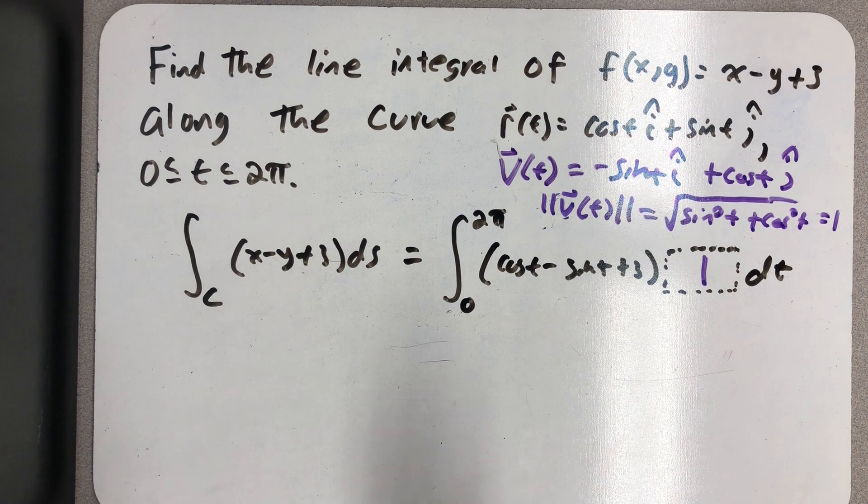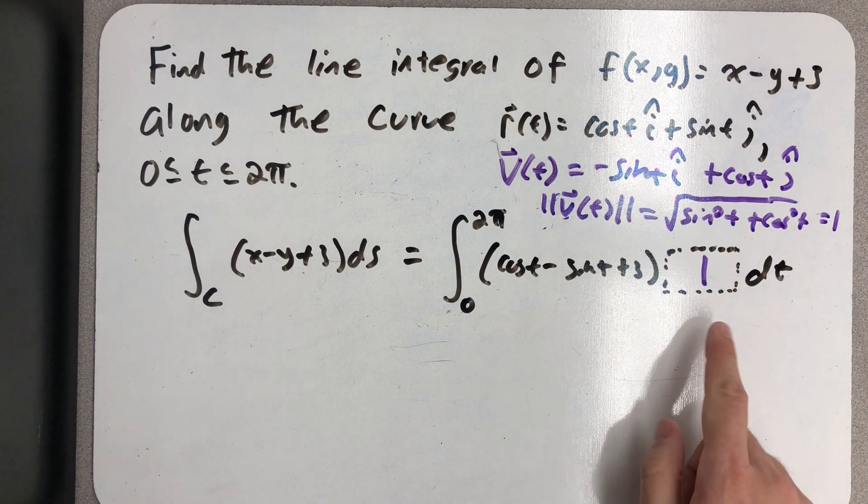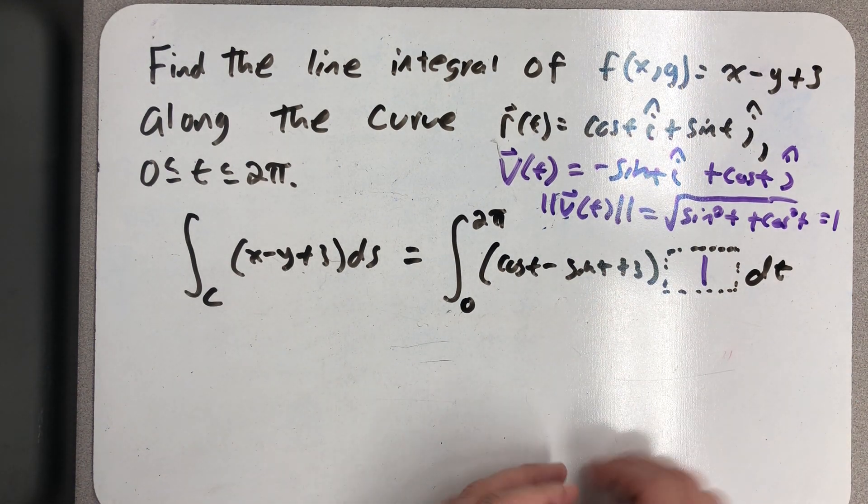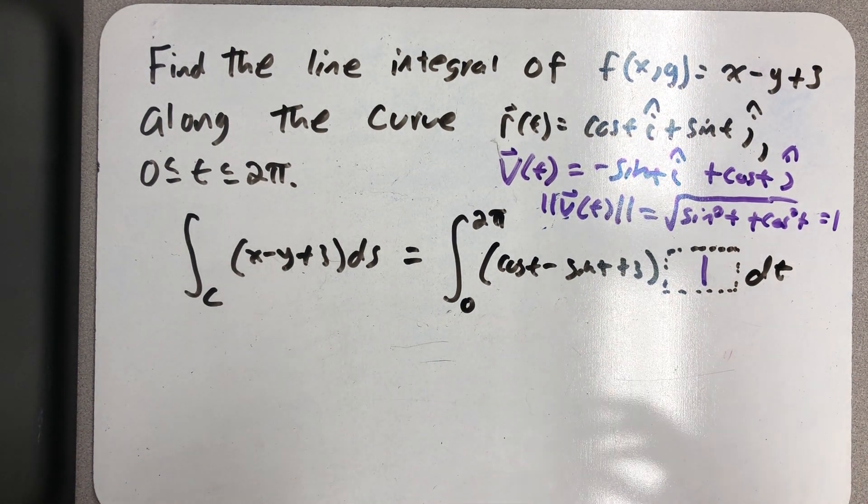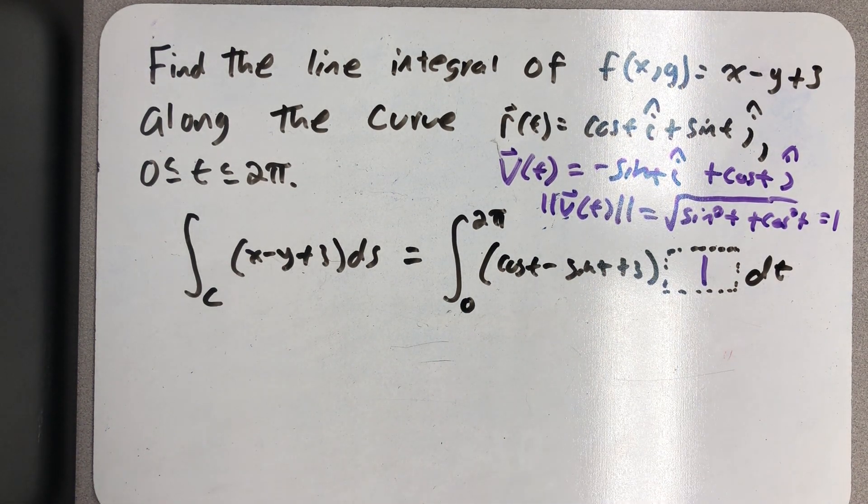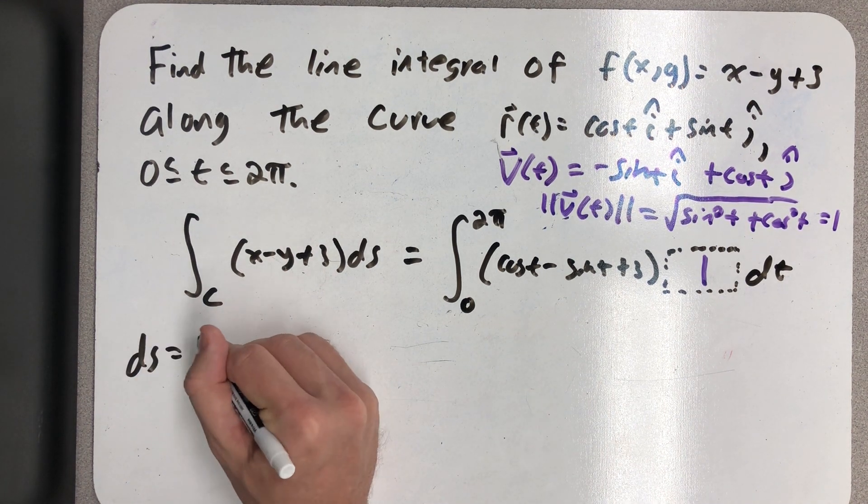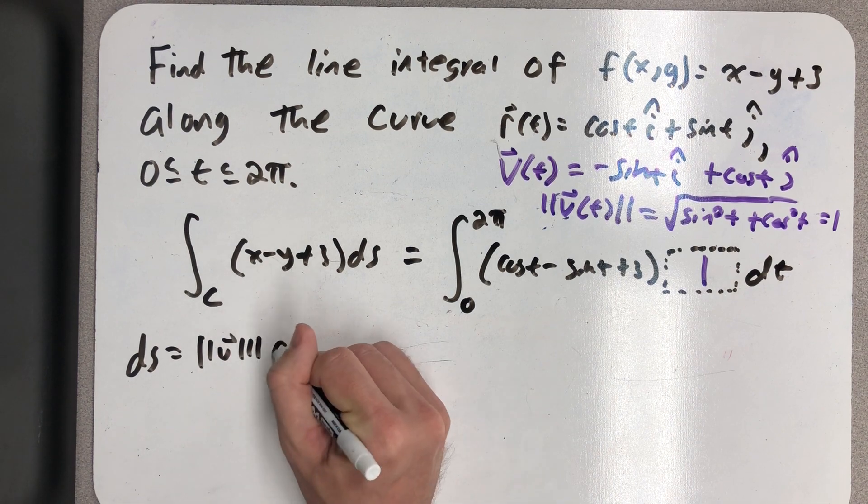So the reason I wanted to go on and make a big production of this is we can't forget this step in this first example. It does work out that the speed is equal to 1, but of course that's not always going to happen, so we can't forget that ds gets replaced with speed dt.